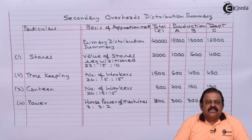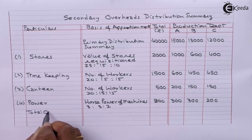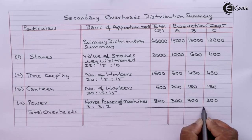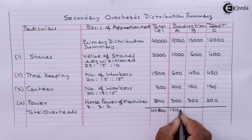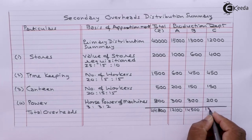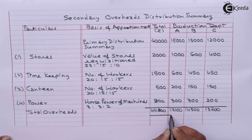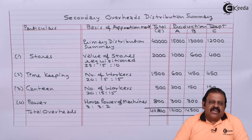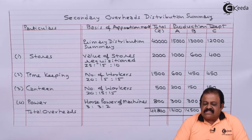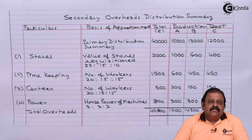Now we can take column totals to know the actual overheads of each production department. After primary distribution of overheads, overheads relating to service departments are redistributed between production departments. Our next step will be allocating these production department overheads to units produced.